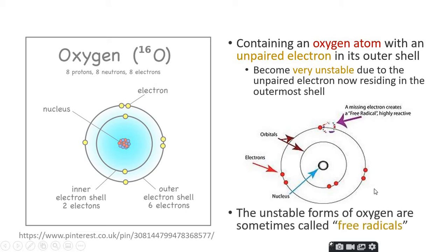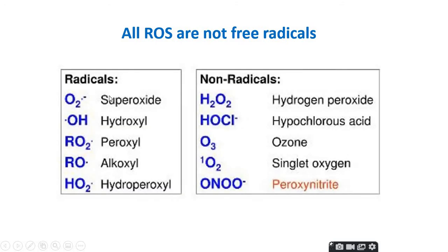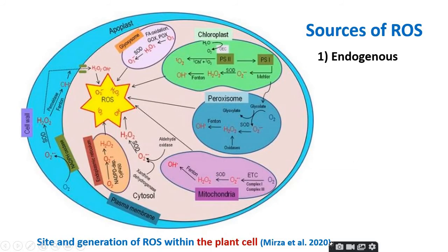Sometimes we call these free radicals because they are very reactive species, but not all ROS are free radicals. There are two categories: radicals — such as superoxide, hydroxyl, peroxyl, alkoxyl, and hydroxyperoxyl radicals — and non-radicals, which include hydrogen peroxide (H₂O₂), hypochlorous acid, ozone, singlet oxygen, peroxynitrate, and similar species.